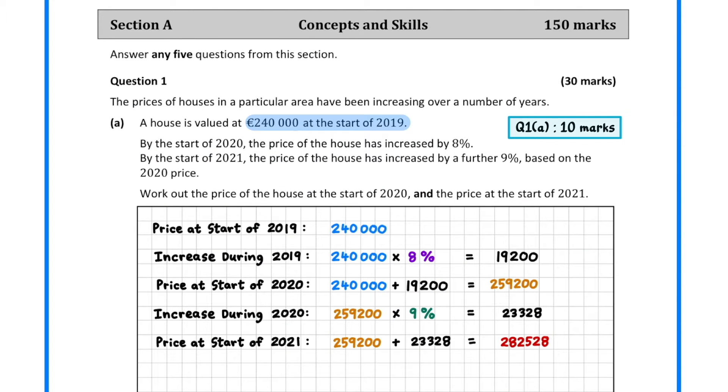In question 1a, we are told that the price of a house is €240,000 at the start of 2019. We must find its price at the start of the following two years. In 2019, the price increases by 8%. To find the value of the increase, we multiply €240,000 by 8%. To get the price at the start of 2020, we add on this figure to the €240,000. This gives us an answer of €259,200.